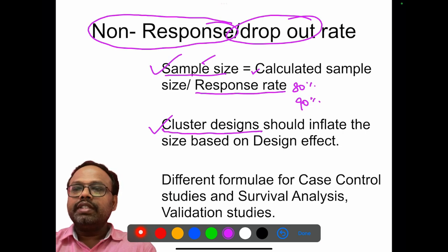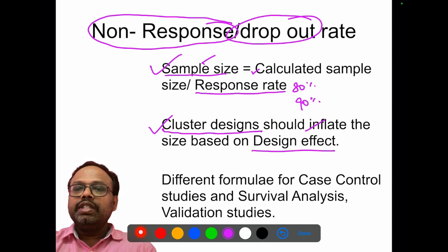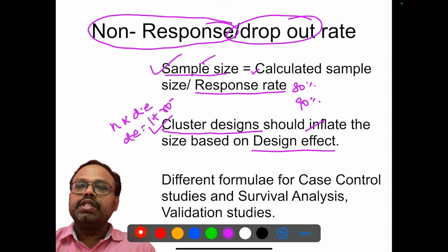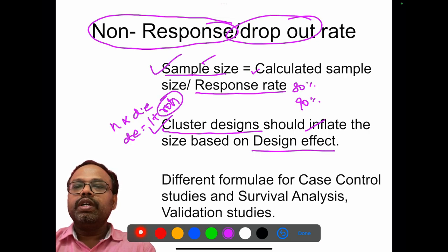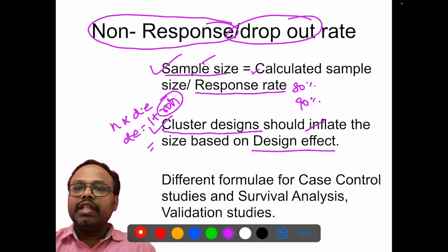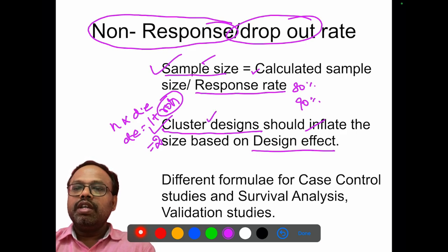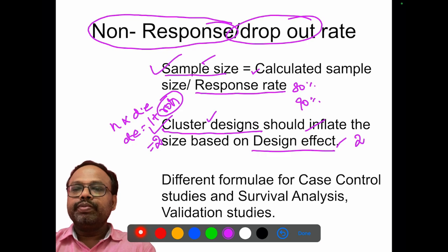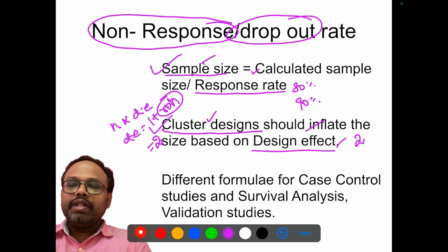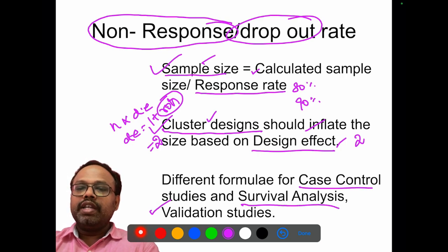If dealing with cluster designs, we should inflate the sample size based on the design effect, given by the formula: 1 plus the intra-class correlation coefficient (rho), where the maximum is 1 and the minimum is 0, decided based on variability between groups. Usually we take this as a maximum value of 2. So for cluster designs, we multiply the sample size by the design effect — usually 2. Also remember there are different formulas for case-control studies, survival analysis, and validation studies.